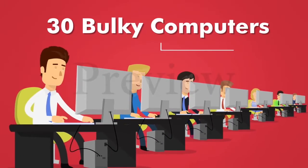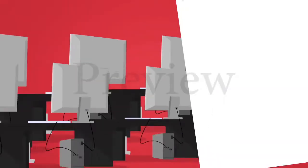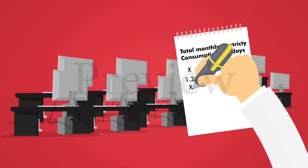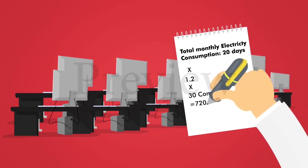Mr. Wright runs a small share trading business with 30 computers in his office. Total monthly electricity consumption for his office is 20 days times 1.2 times 30 computers equals 720 units.